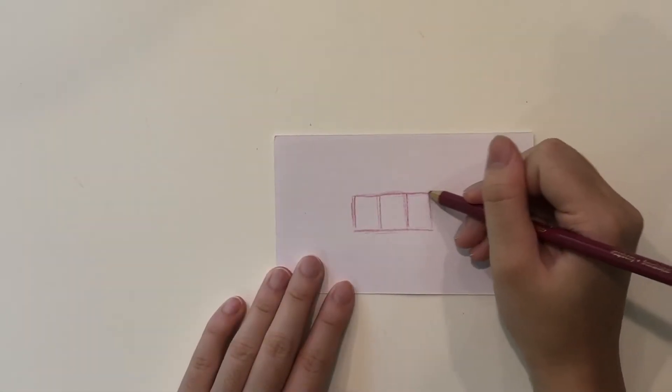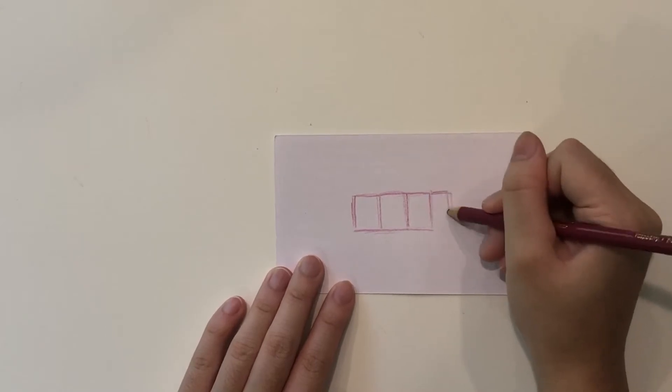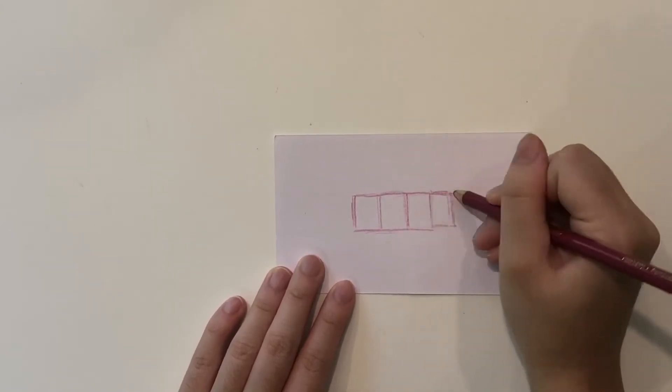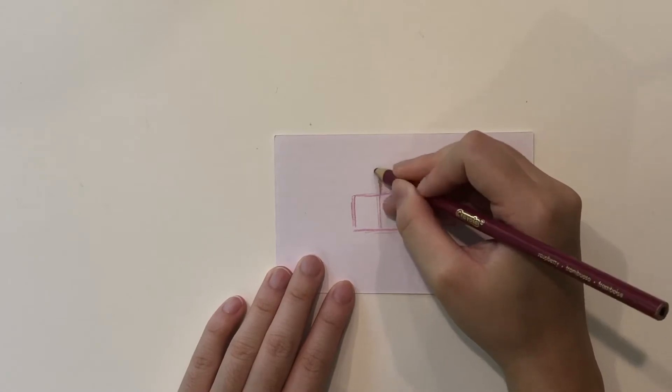We need to create a box at the back of the spaceship. So draw four rectangles and on the second rectangle draw another rectangle on top.